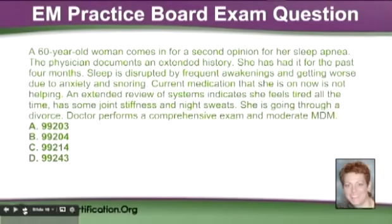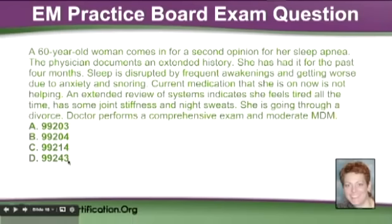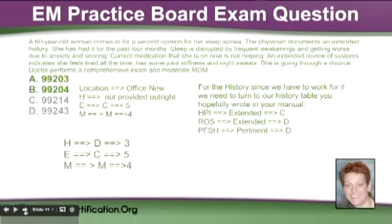This question is from students who have taken my Blitz or the course. I teach a method called 'Locate your HEM and Time,' which means first identify the location or category and subcategory of E&M. In this case, the answer choices are 99203 and 99204 — office new patient codes — 99214 is an established patient, and 99243 is a consult. Because they're coming in for a second opinion, we can cross off C and D. So it's now going to be 99203 or 99204, and that's the tiebreaker we need to figure out.